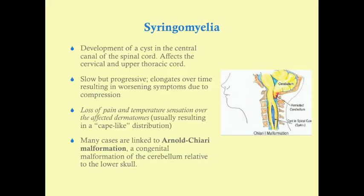Syringomyelia is a cyst in the central canal of the spinal cord. If there's any obstruction, that canal can fill with cerebrospinal fluid and compress surrounding nerves. This is a slow process, usually resulting from specific causes, and it progresses over time — it doesn't remit on its own. The cyst elongates rather than pushing outward, because the pressure is less going downward. So this is a long, narrow cyst, and the longer it gets, the more nerves it compresses on more levels, causing progressive worsening symptoms.